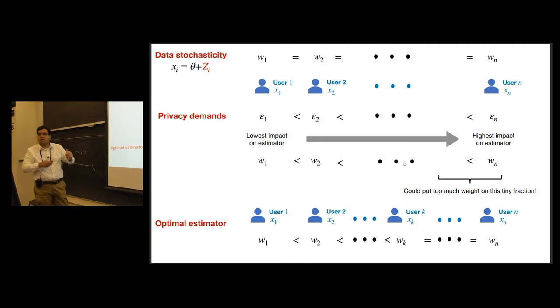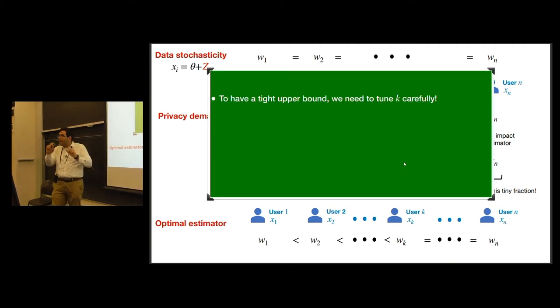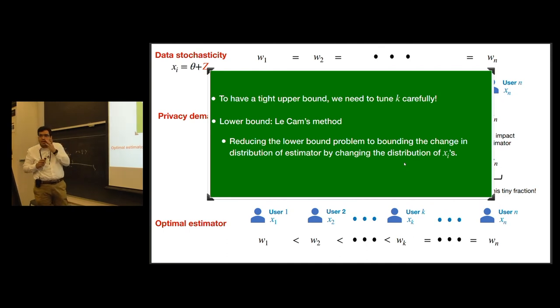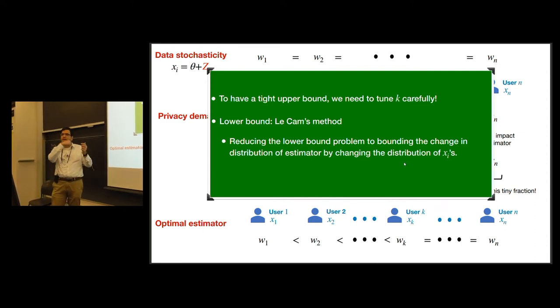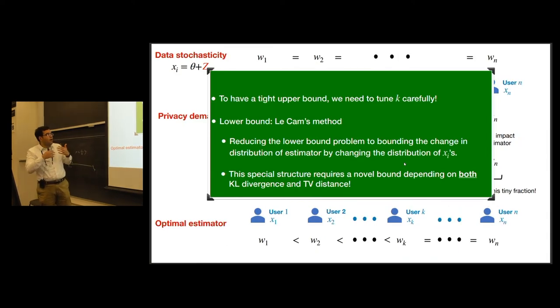But this violates the idea that we had when we were looking for suppressing the effect of the noise Zi and making this Wi close. In fact, what we observe is that if we go with this regime, we could end up putting too much weight on a tiny fraction of data from the last couple of users, and this could lead to a very suboptimal estimator. In fact, it turns out that the optimal estimator is in the following way: there is a K for which, for the first K users, we increase the weights proportional to epsilon i, but then at some point we should just keep it unchanged and cap it. This turns out to be the optimal estimator. But even after making this observation, we need to tune that K carefully and derive a lower bound. For the lower bound, we use a technique from statistics called Le Cam method, which reduces the lower bound to a problem of bounding the change in the distribution of theta hat when you change the distribution of XIs.